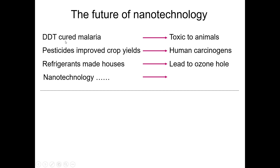DDT has benefits but also drawbacks — it is harmful to living organisms. On one side DDT was discovered and utilized for treating malaria, but it was also proven to be toxic to animals. Similarly, pesticides improved crop yields, but it has been found that most pesticides have harmful effects on the human body.